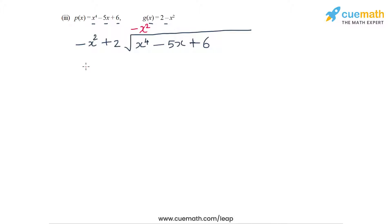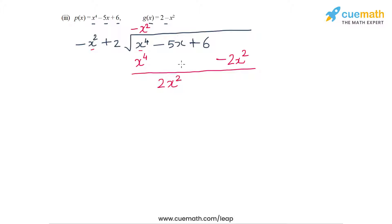The first multiplier is -x², because we want to turn -x² into x⁴. This generates terms x⁴ - 2x². Since there is no quadratic term in the dividend, we write -2x² here. After subtracting, we get +2x² - 5x + 6. The second multiplier is -2, generating 2x² - 4.